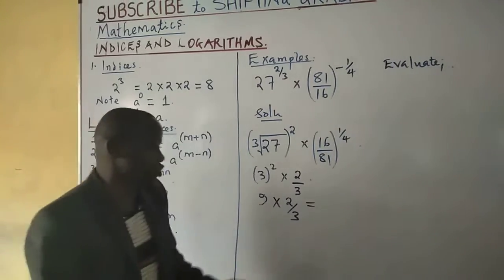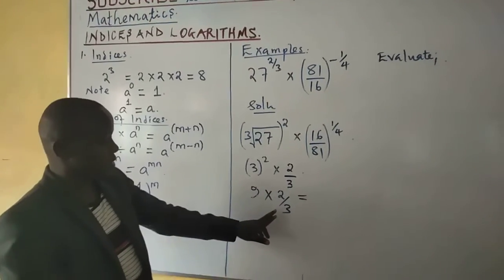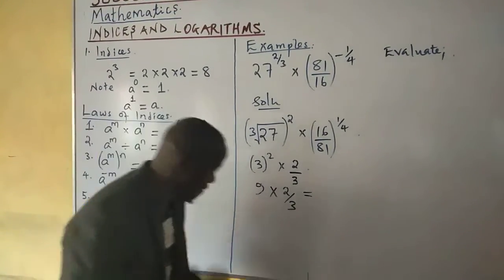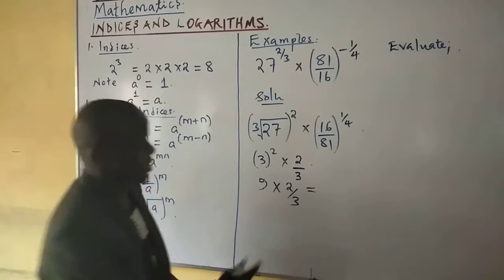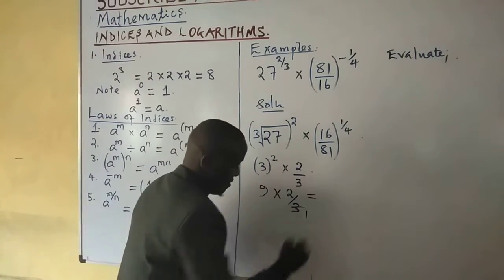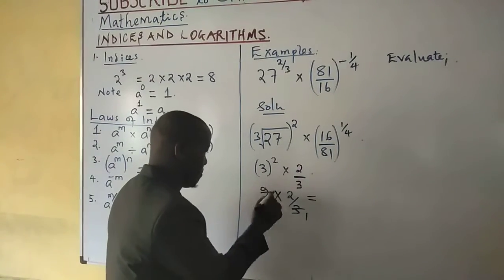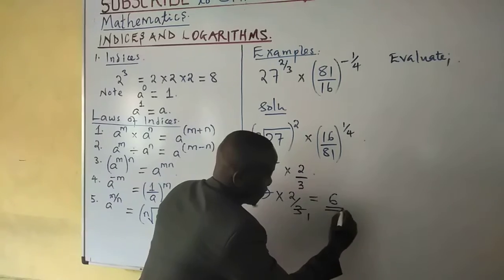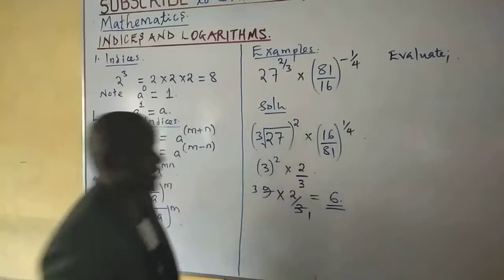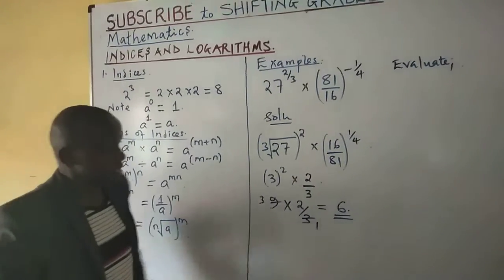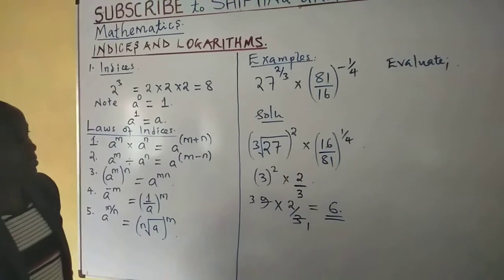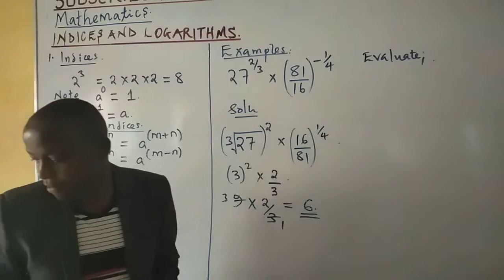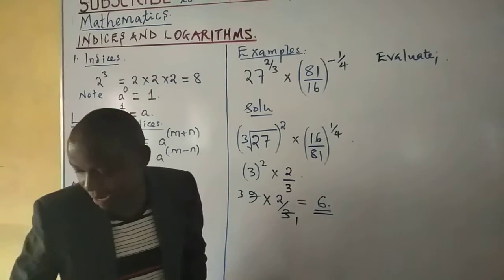When you simplify 9 times 2 over 3, you divide 9 by 3 to get 3, then 3 times 2 gives 6. The answer is 6.